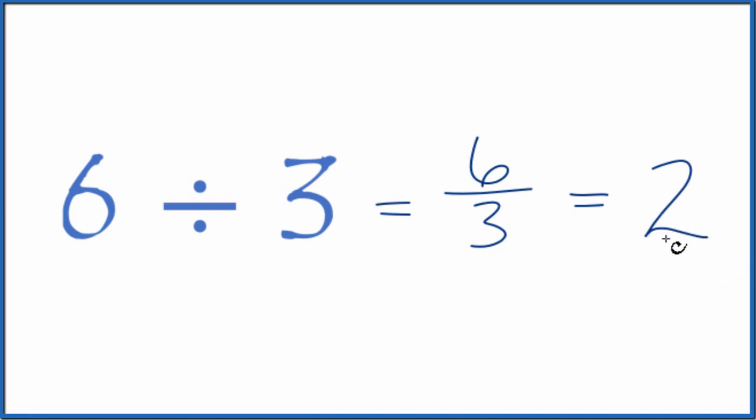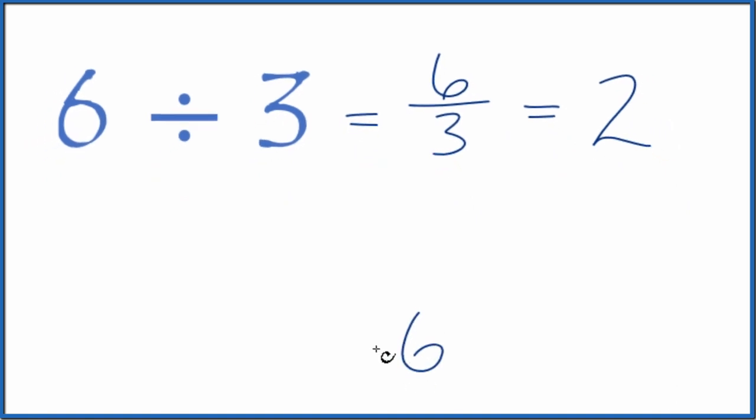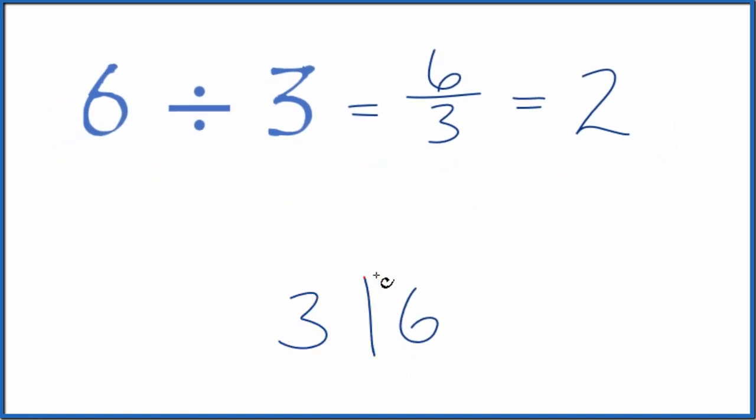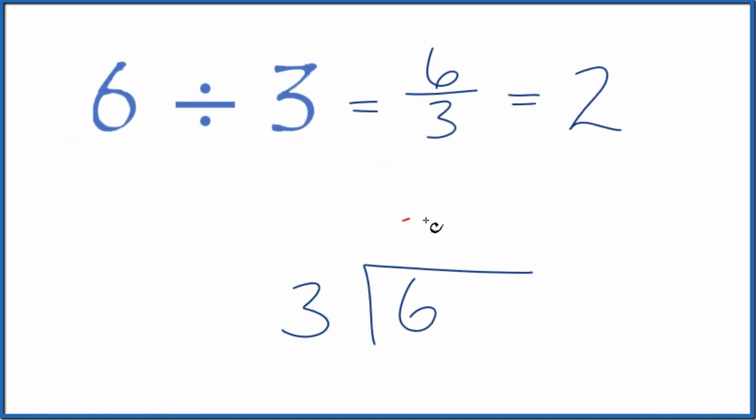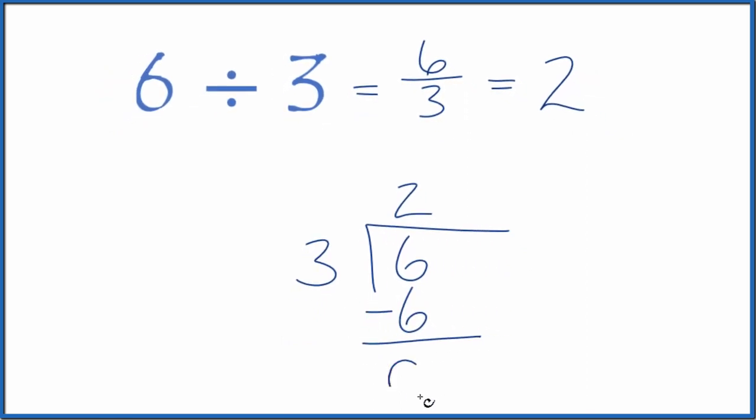It comes up so often. The other way to do it is if you wanted to do this longhand, you could say I have 6 and I wanted to know how many times 3 goes into 6. So 2 times 3, that's 6. We subtract. We don't have any remainder.